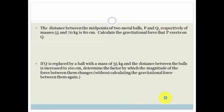It says the distance between the midpoints of two metal balls, P and Q, respectively, of masses 55 and 70 kg is 80 cm apart. Calculate the gravitational force that P exerts on Q.